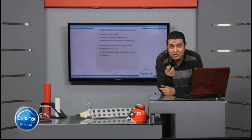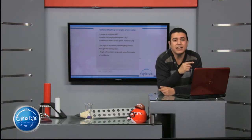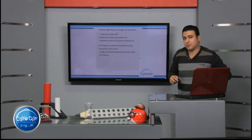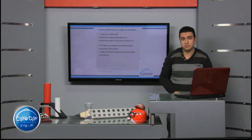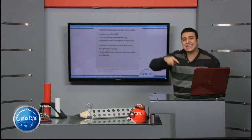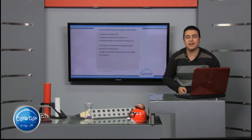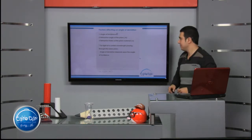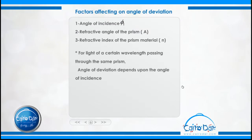The angle of deviation alpha is affected by three main factors. First, angle of incidence (φ₁). Number two, refractive angle of the prism (A, capital). Number three, refractive index of the prism material.